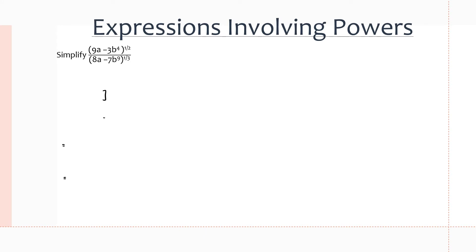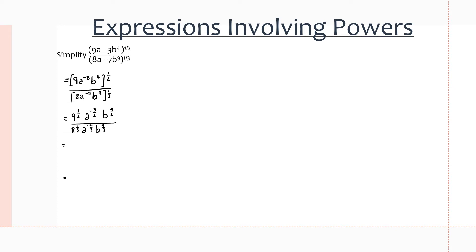This question — you can't clearly see what's the exponent and what isn't, so I just rewrote it over here. Basically, if we start simplifying this, the way we go about it is we start distributing the powers. So 9 to the power of 1 half, a to the power of negative 3 multiplied by 1 half, b to the power of 4 multiplied by 1 half, and the same goes for the denominator. So we get 9 to the power of 1 half, a to the power of negative 3 over 2, and b to the power of 4 over 2, all over a to the power of negative 7 over 3, and a to the power of 1 over 3, and b to the power of 9 over 3.